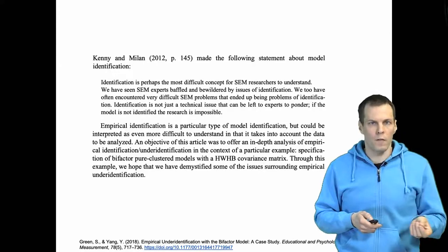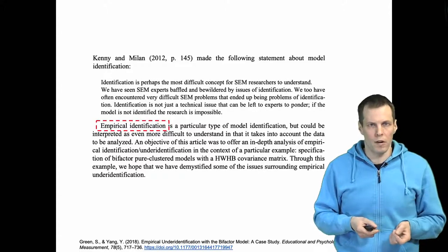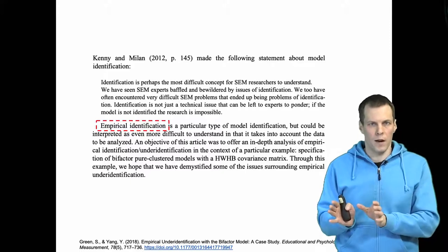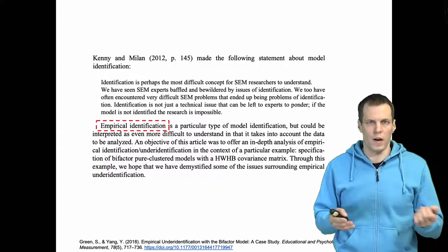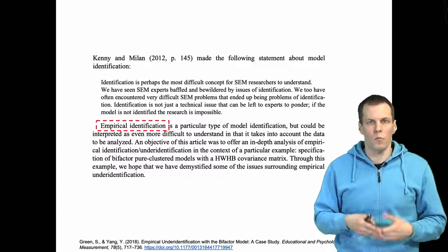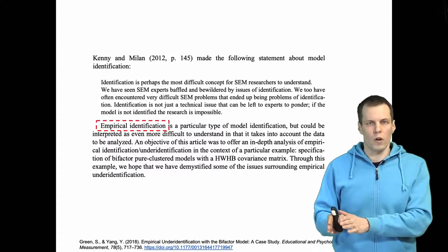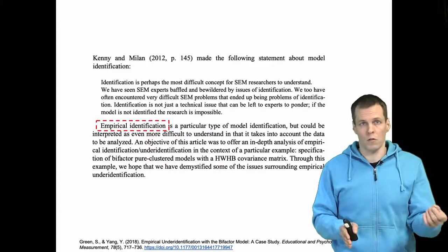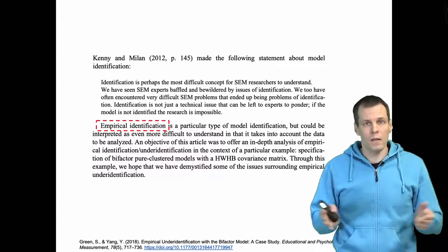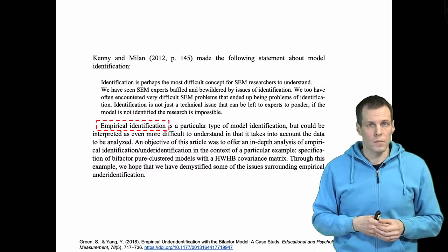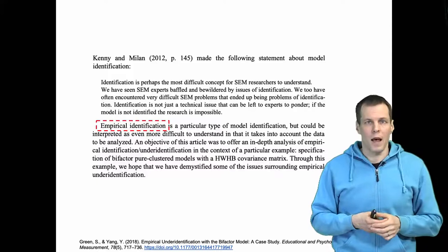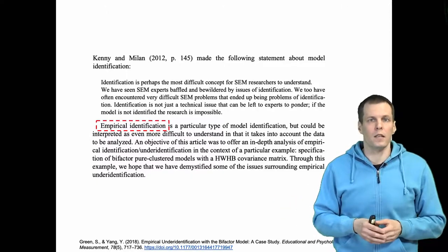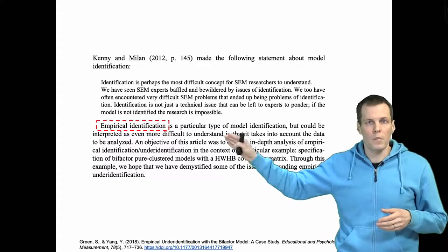One particular problem in identification of these models is that they may also be empirically under-identified. It's possible that the model is identified generally, but for specific values of sample or population covariances, the solution to the parameter estimates does not exist. The idea of proving identification is that you work backwards from model-implied covariances to the actual coefficients or parameters. Sometimes some of these covariances are zeros and you may end up with a division by zero, which indicates empirical under-identification.